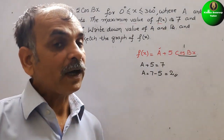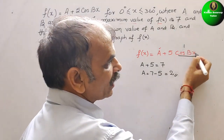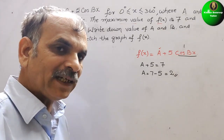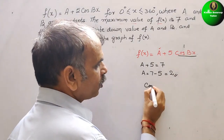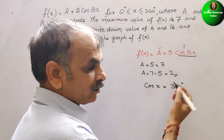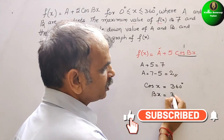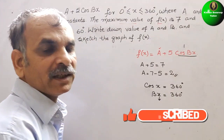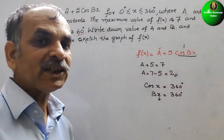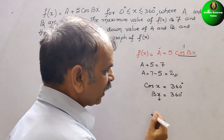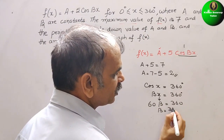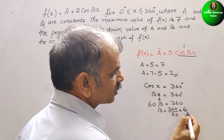Next we find the value of b, which comes from the period. We know that cos(x) completes a full cycle in 360°. But here we have cos(bx), so bx = 360°. Since the period given is 60°, we substitute x = 60: 60b = 360, so b = 360 ÷ 60 = 6. Therefore b is 6.